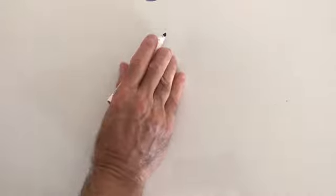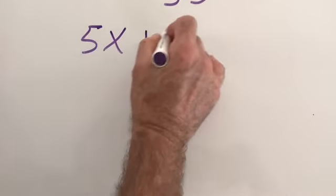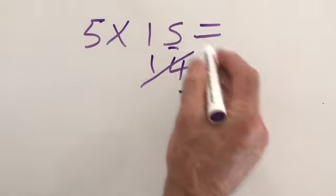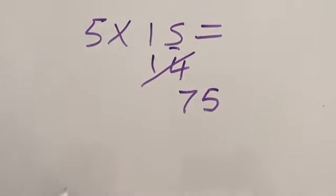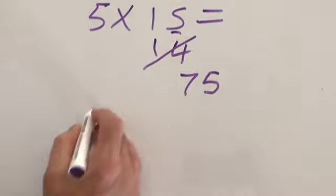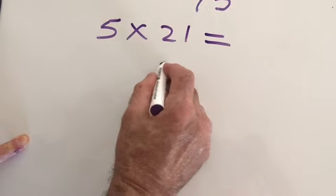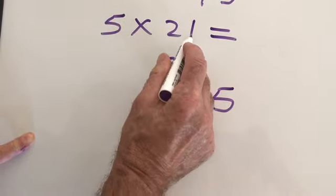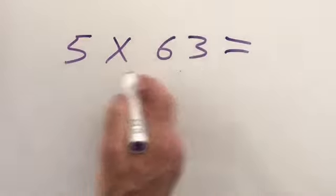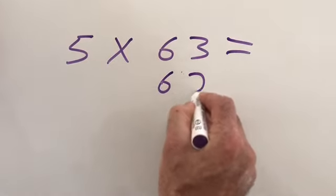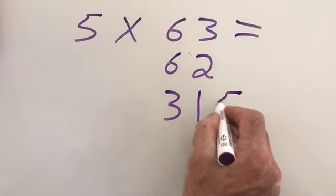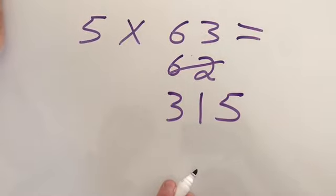Let's try a harder one. 5 times 15 equals. The previous number is 14. I halve it. I get a 7. And because it's an odd number, I'm going to add a 5. 5 times 21 equals. The previous number is 20. I'm going to halve it. I'm going to get a 10. I'm going to add a 5 on the end because it's an odd number. It's an odd number. I'm going to look at the previous number, 62. I'm going to halve it and I get 31. Put a 5 on the end because it's an odd number.